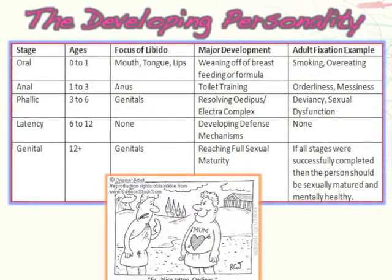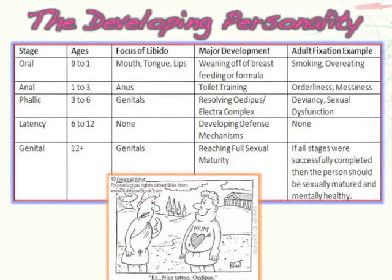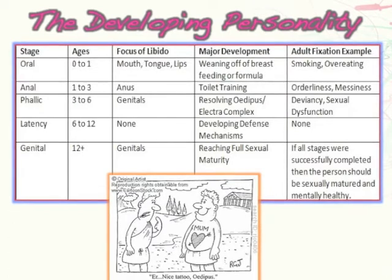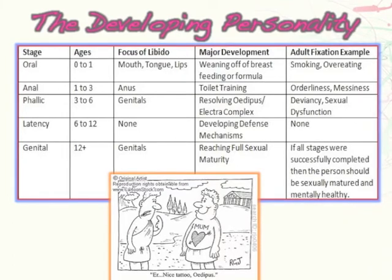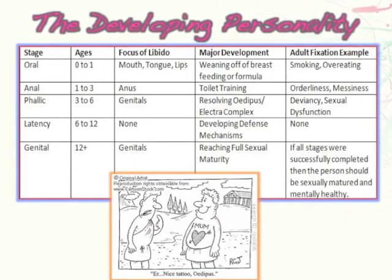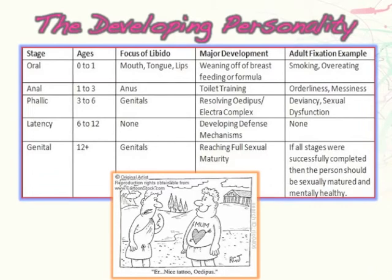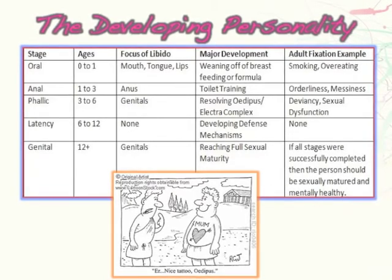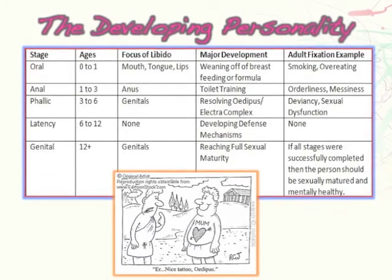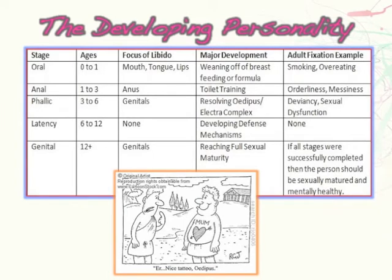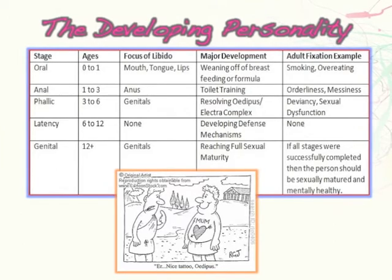The last stage is the genital stage, beginning at age 12. Freud was from Victorian times when lifespans were shorter — he might say it starts a bit later today. The focus of libido returns to the genitals, and the goal is to reach full sexual maturity by having consensual, non-deviant sex with someone in a loving relationship. If all stages are completed successfully, the person develops normally, according to Freud.